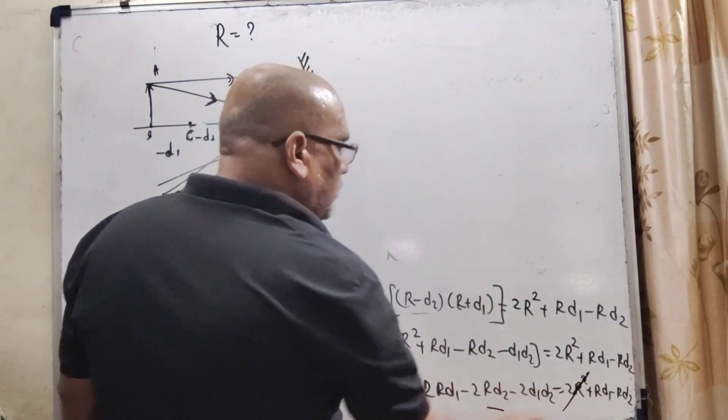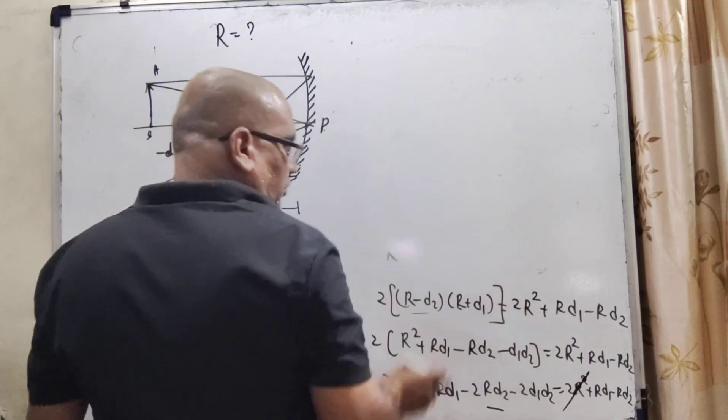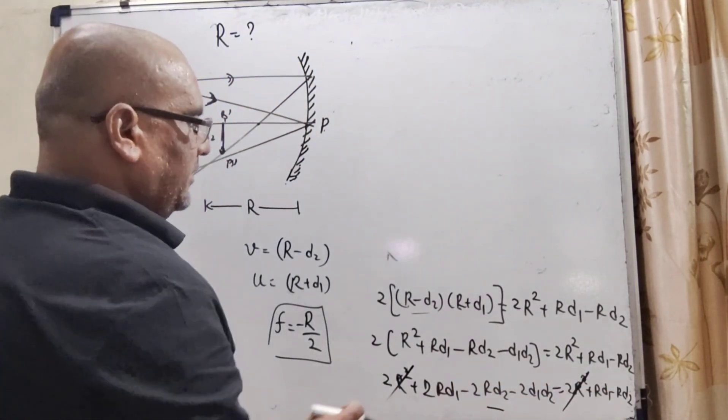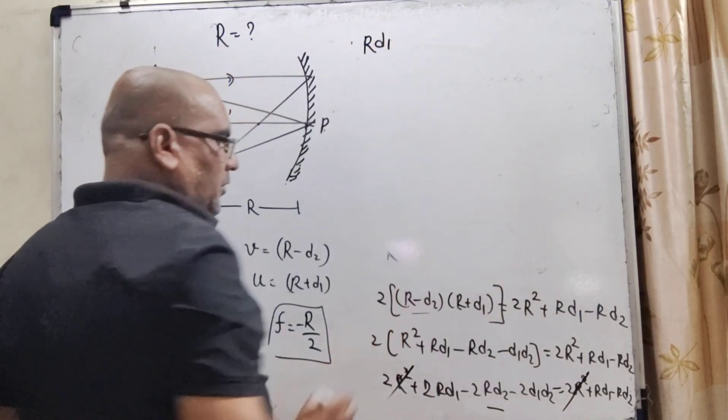Now, this 2R square, 2R square cancel out. Now, 2Rd1 and transposing this Rd1 to the left side and subtract it. Now, it becomes Rd1.